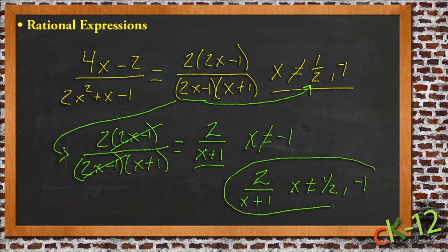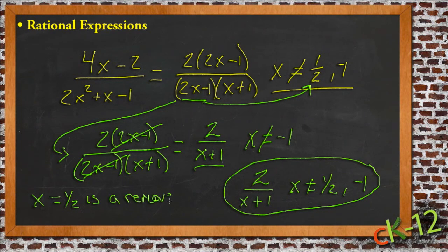So we call that value, in this case, the 1 half, x equals 1 half, is a removable zero, because we found that it was a value that x couldn't be early on, and it didn't show up at the end when we were done with our simplifying.